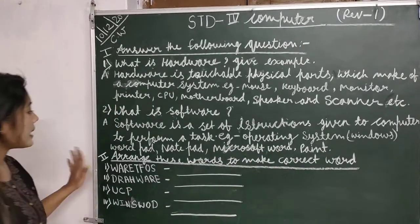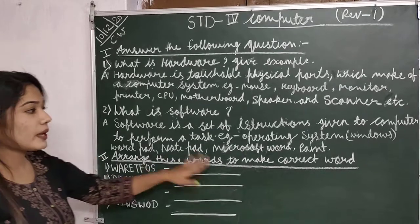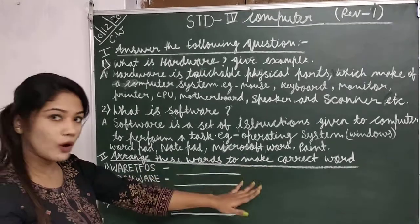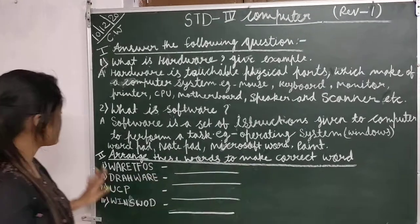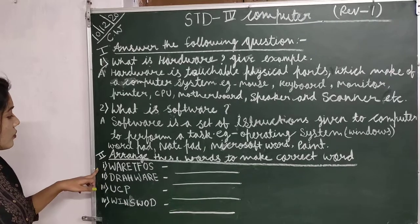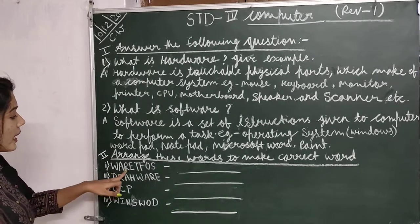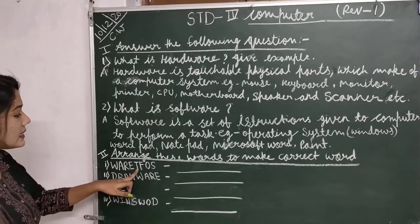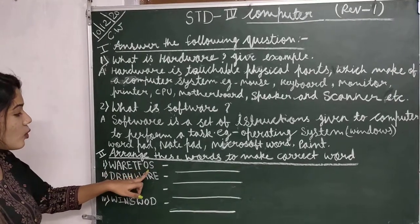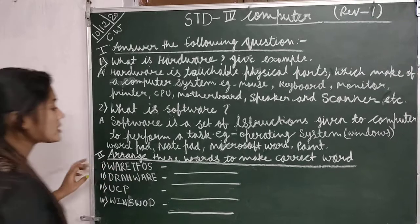Okay, next arrange these words to make the correct word. First is w-a-r-e-t-f-o-s. It will be software.